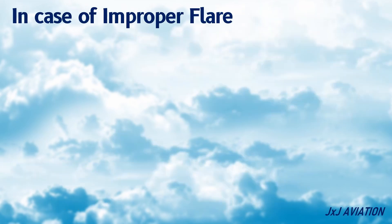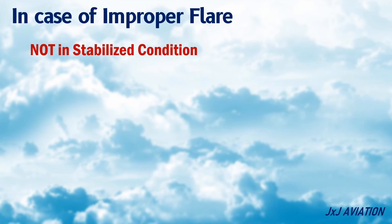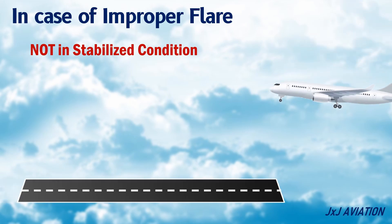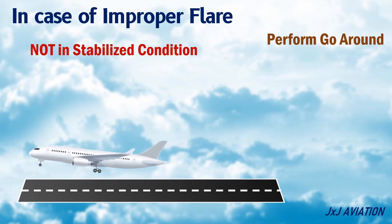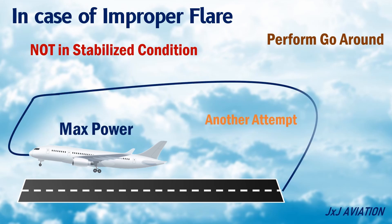Actions to be taken in case of improper flare: if the flare is not executed correctly or if the aircraft is not in a stabilized condition, a go around should be performed. Here the pilots will increase thrust to maximum power and another attempt is made to land the aircraft safely.